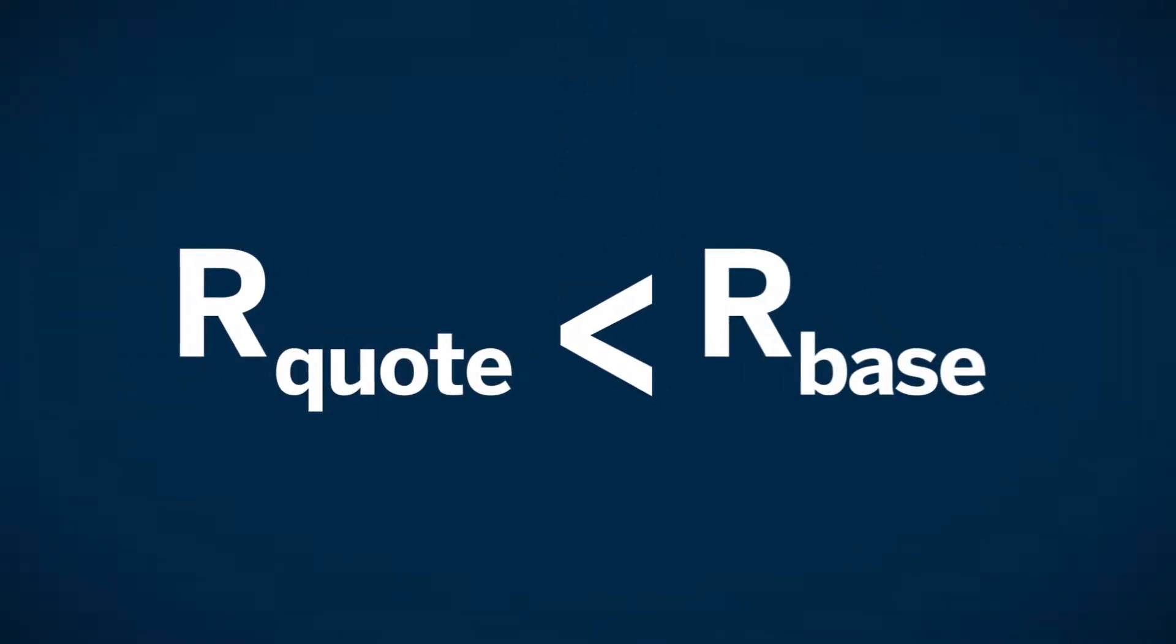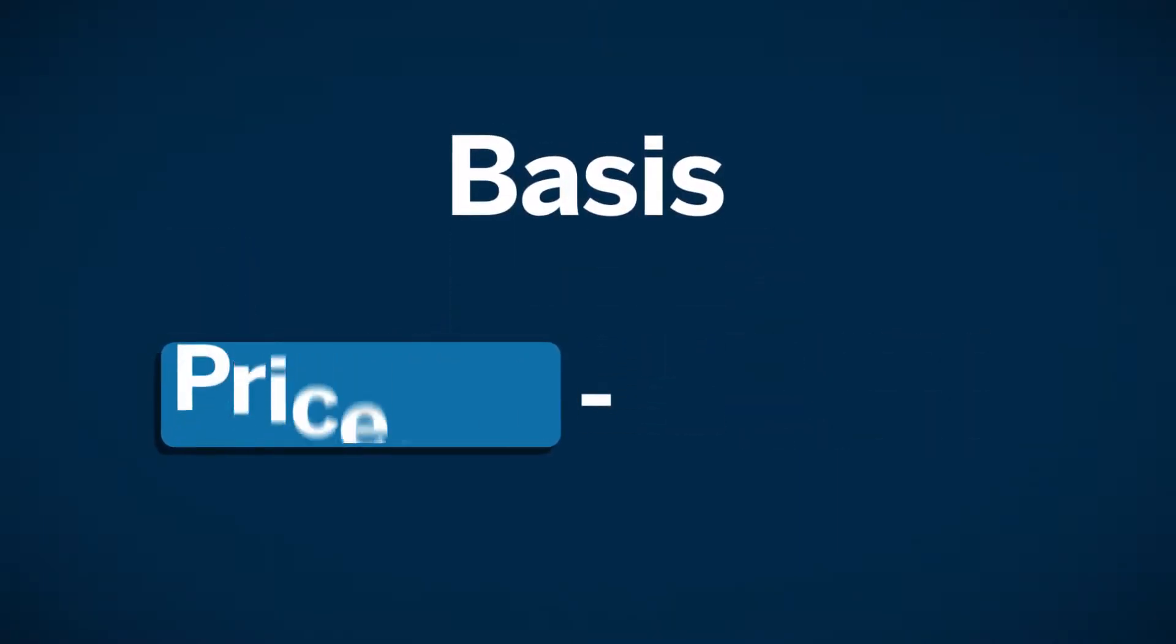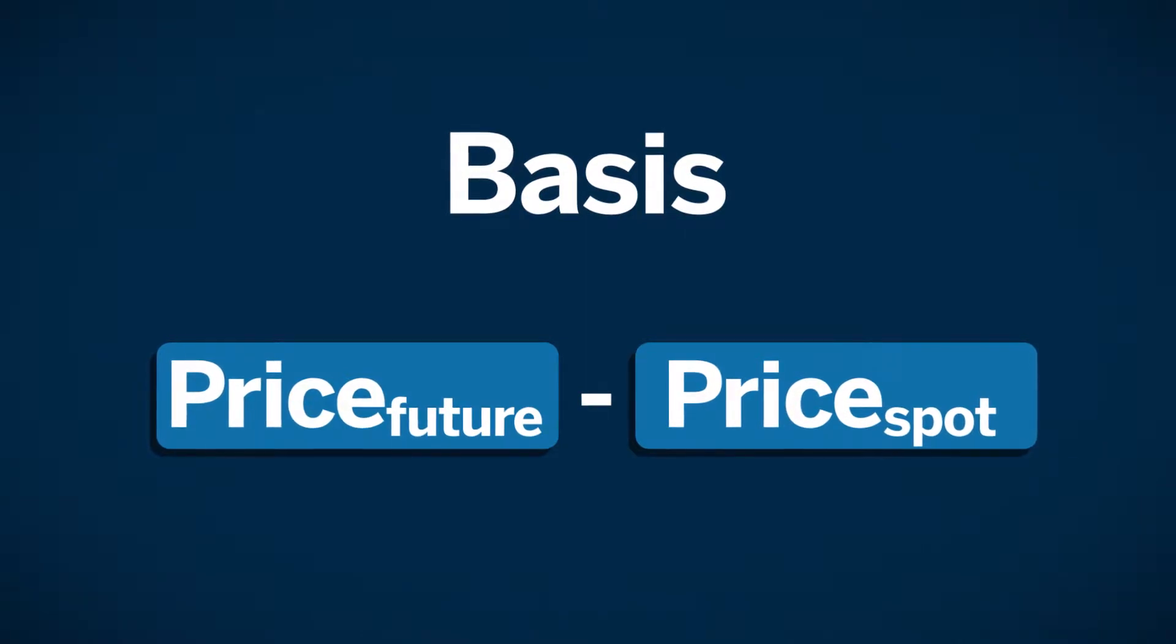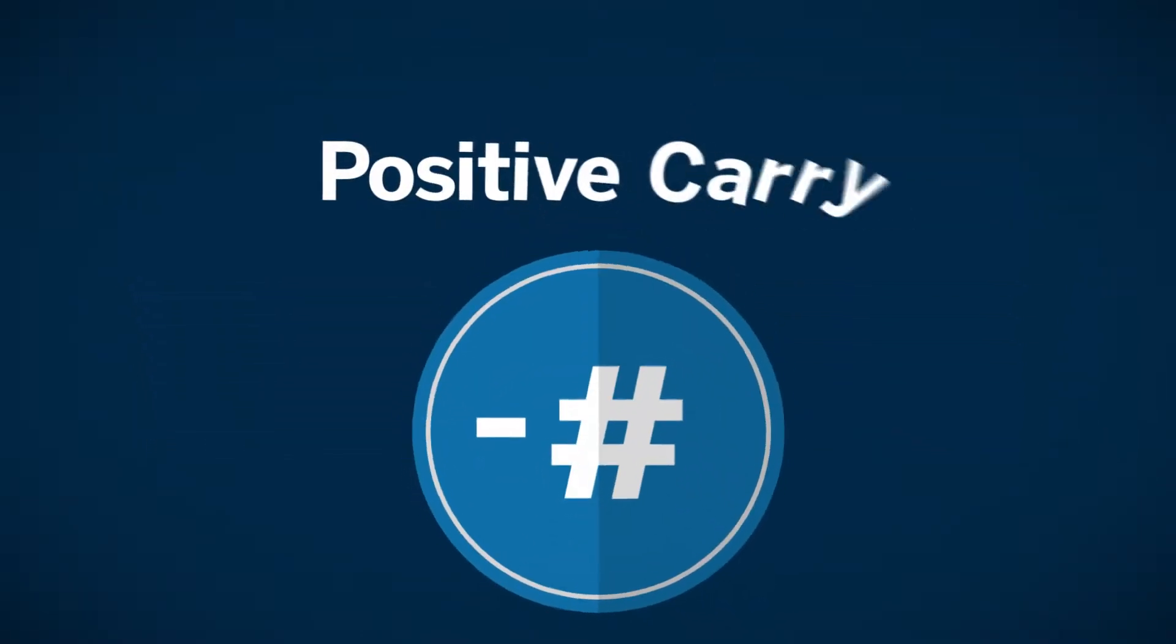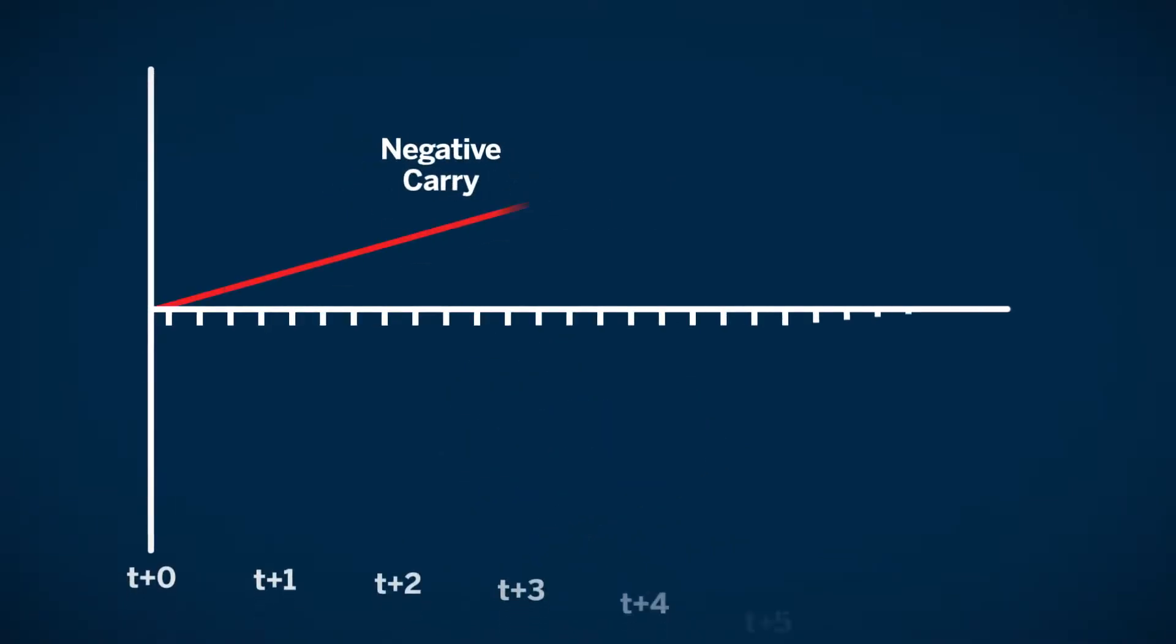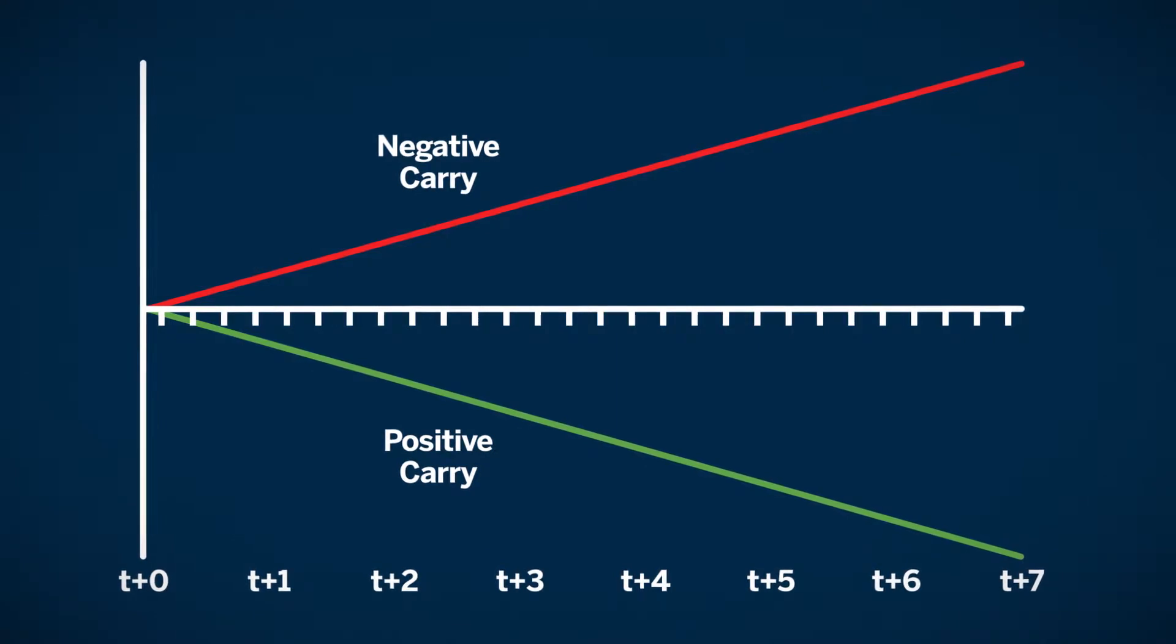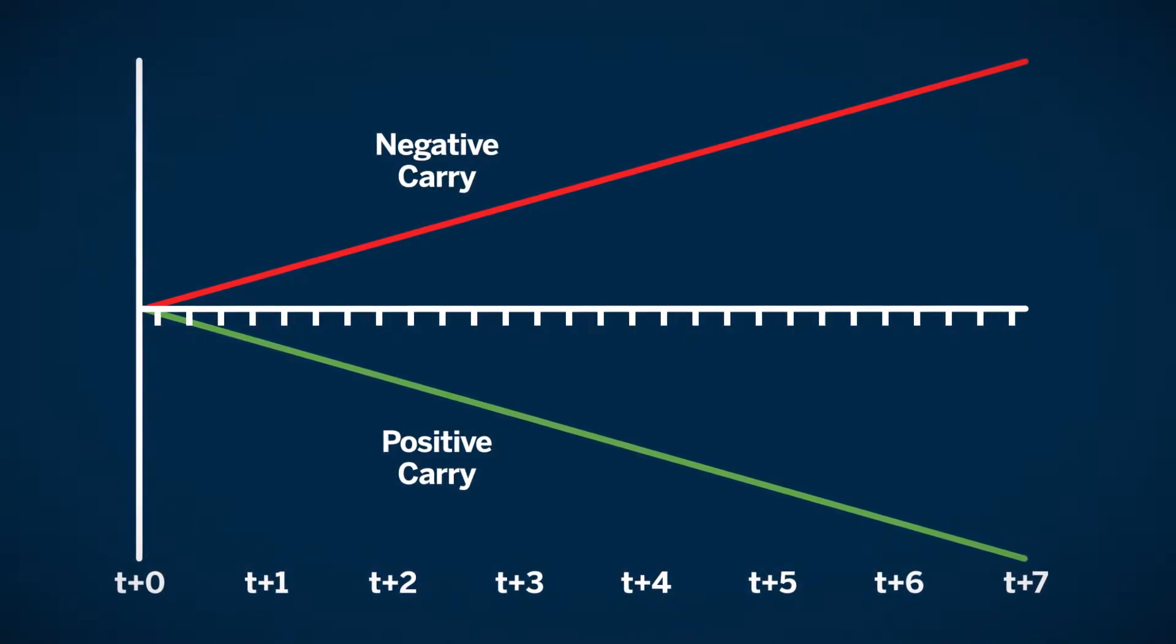If the short-term interest rate of the quote currency is lower than the short-term interest rate of the base currency, futures should trade at a discount to the spot rate. The basis, futures minus spot, would be quoted as a negative number. This negative number is the result of what is known as positive carry. It is referred to as positive because an investment in the base currency's short-term interest rate generates more income than the income generated by the quote currency's short-term interest rate.